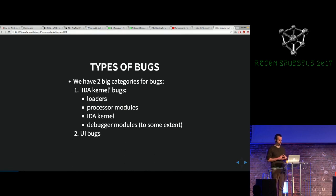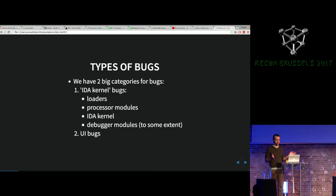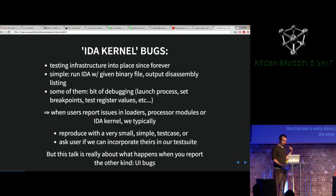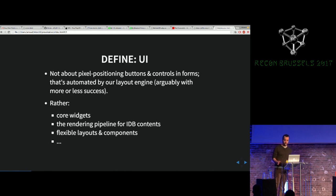We have two big categories of bugs in IDA. First, the kernel bugs, which typically affect the loaders, processor modules, and everything related to the disassembly itself. And then we have another class of bugs — the UI bugs — which is everything user interface related, crashes and things like that. This talk is about the UI bugs, not what we call the kernel bugs. It's IDA's kernel, not the OS kernel, obviously.